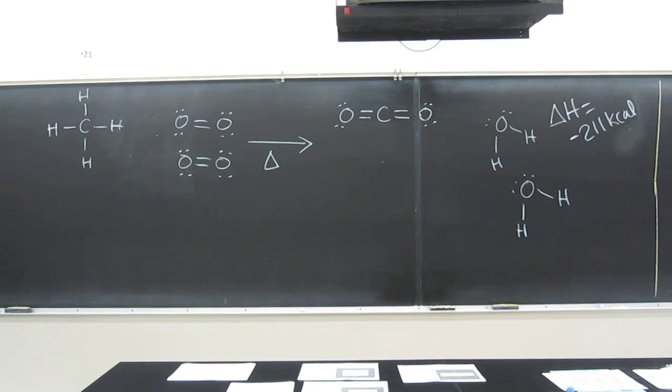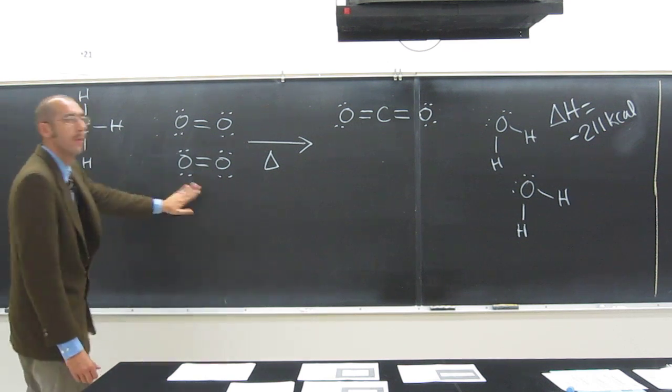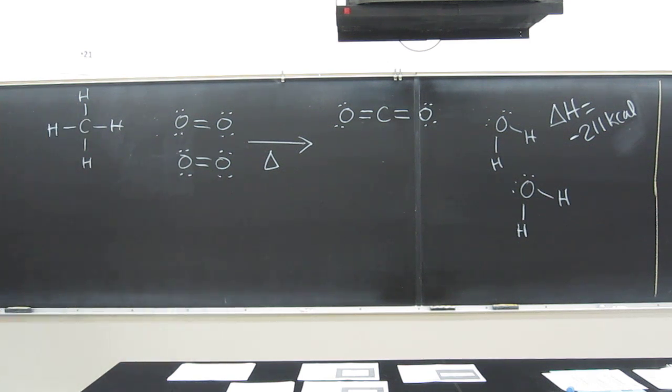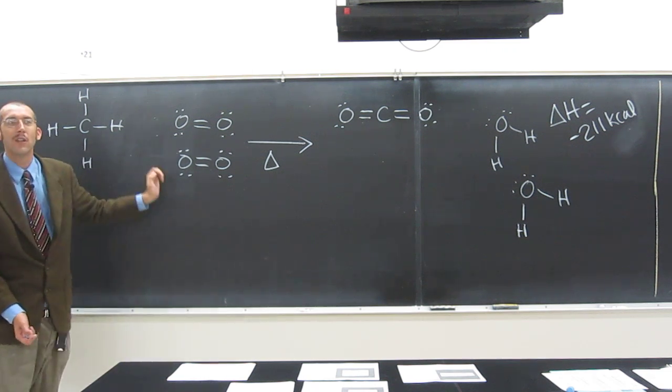So what bonds are broken and what bonds are formed? That's essentially what we want to ask ourselves. What kind of bonds do we have on this side? Does anybody see a type of bond? A double bond between what? There's a double bond between two oxygen atoms, right? Is there only one double bond between two oxygen atoms? There's two of them because there's two oxygen molecules.